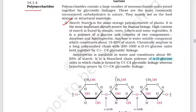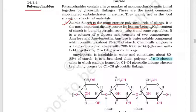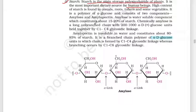Starch is an important storage polysaccharide in plants. Plants store it as a food item. Human beings get starch as the most important dietary source from cereals, roots, tubers, and vegetables. Starch is a polymer.